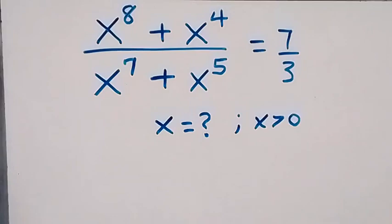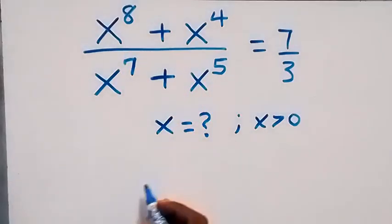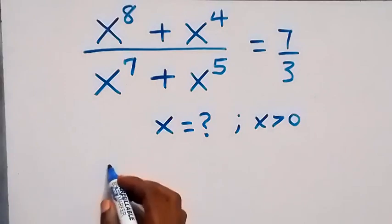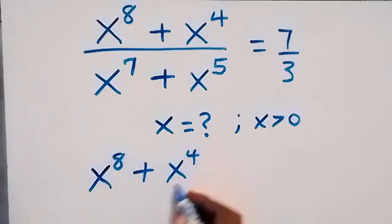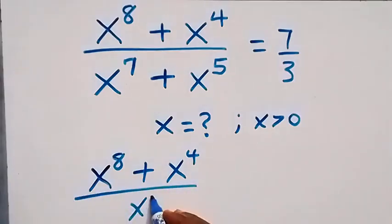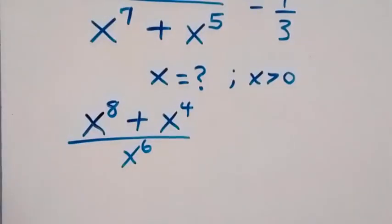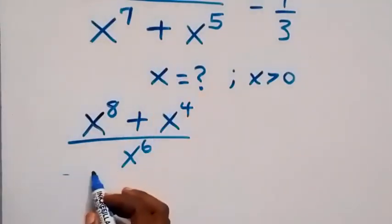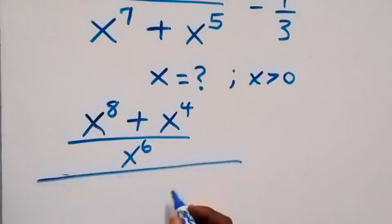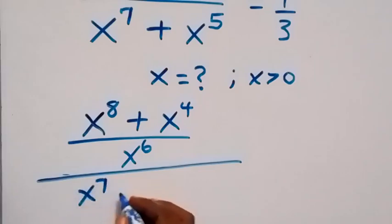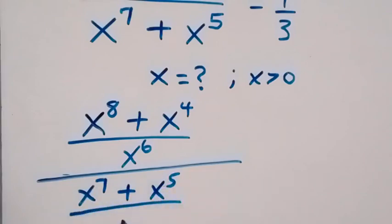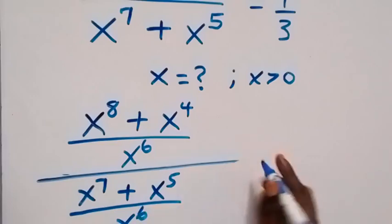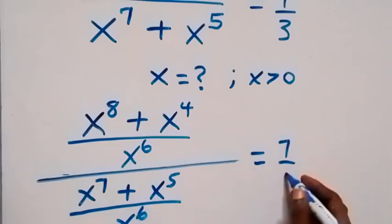From here, let's divide the numerator and the denominator by x raised to power 6. So we have x raised to power 8 plus x raised to power 4, divided by x to power 6, and also we do the same thing for the denominator: x raised to power 7 plus x raised to power 5, also divided by x raised to power 6, which then equals to 7 over 3.